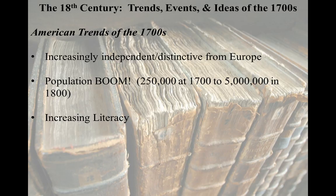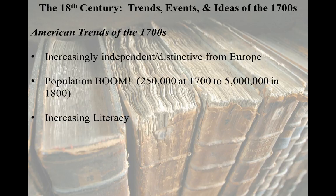We also see increased literacy — a byproduct of industrialization, the Enlightenment, and the continuing refinement of the printing press and improvements in paper. More and more things are being printed, and more printing presses are opening in the Americas. There's a strong correlation between the rise of printing presses and the American Revolution, because the Revolution is in part driven by written literature — whether it's the Declaration of Independence, Thomas Paine's Common Sense, or the writings of Ben Franklin — all being written and published with a large reading audience to receive them.